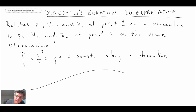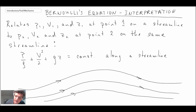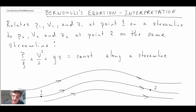If we have a flow field with streamlines, and we want to apply Bernoulli's equation between two points — say point 1 and point 2 — then point 2 needs to be on the same streamline as point 1. It cannot be on a different streamline within the flow field.